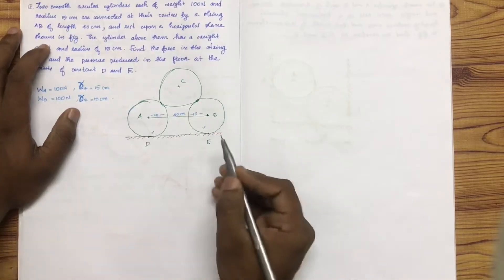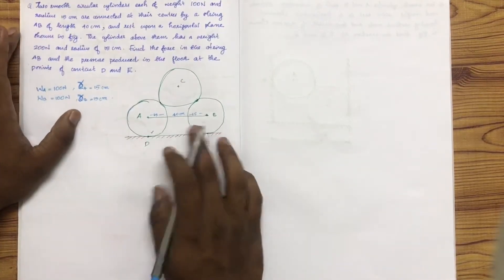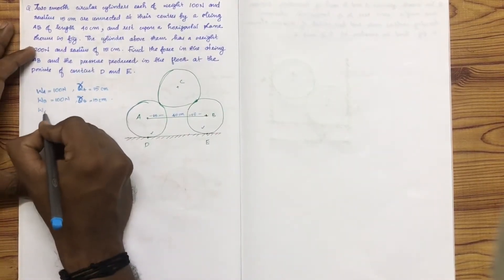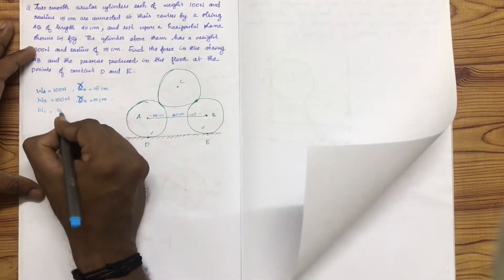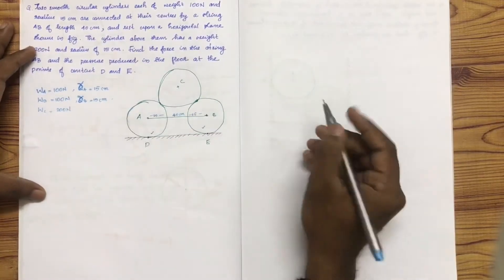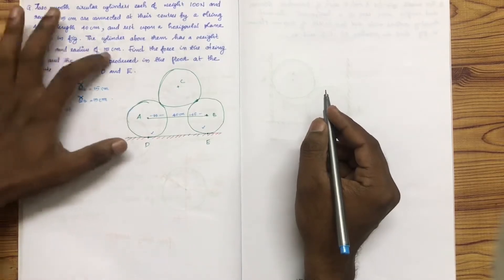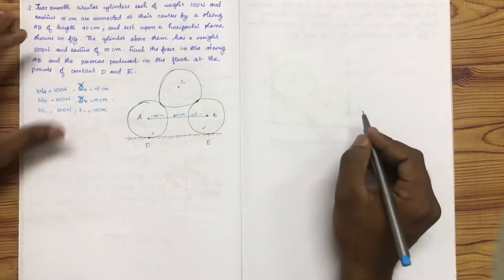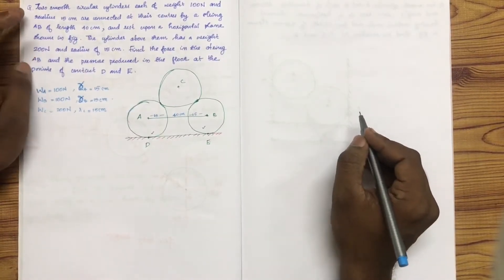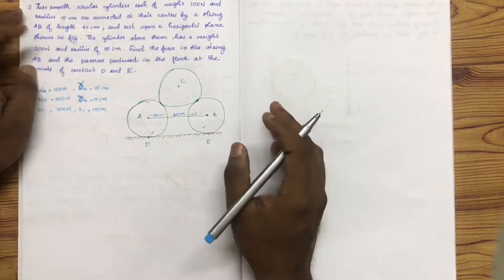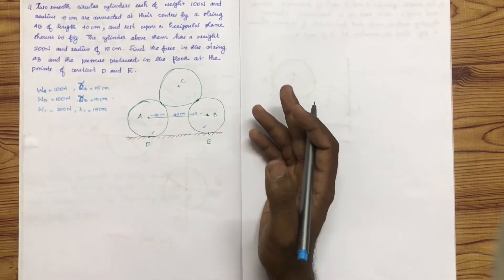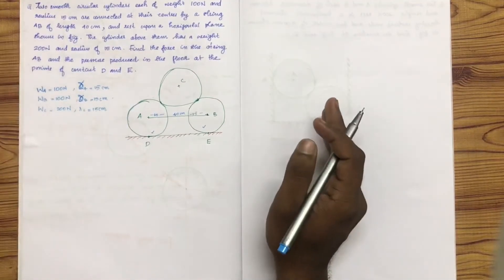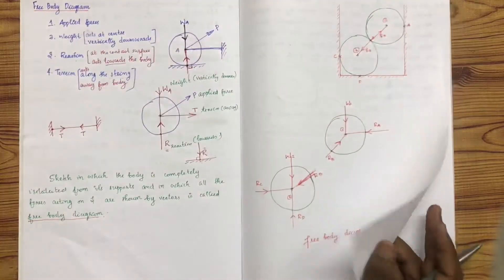D and E are the contact points of the cylinders with the horizontal plane. The cylinder above them — cylinder C — has weight WC equal to 200 N and radius 15 cm. We need to find the force in the string, which is tension T, and the pressure produced on the floor at points D and E.